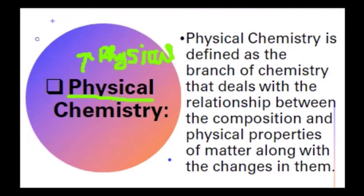For example, water is a liquid — liquidity is water's physical characteristic, a property visible to us. A book is a solid. Gas has its own physical properties. So matter has different kinds of physical properties that we study.